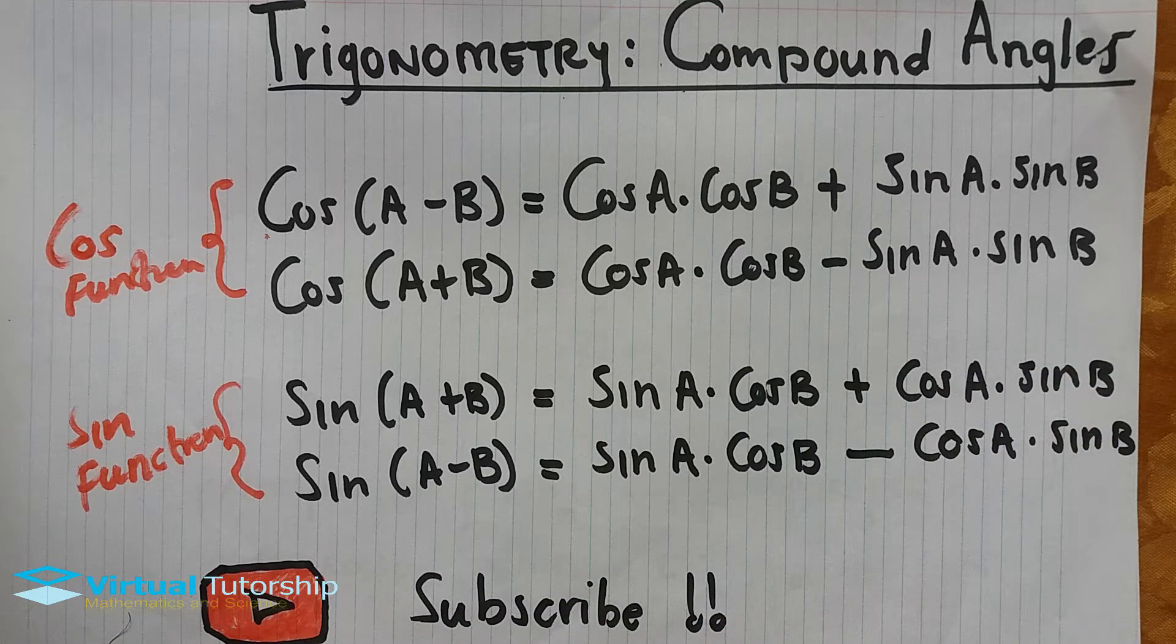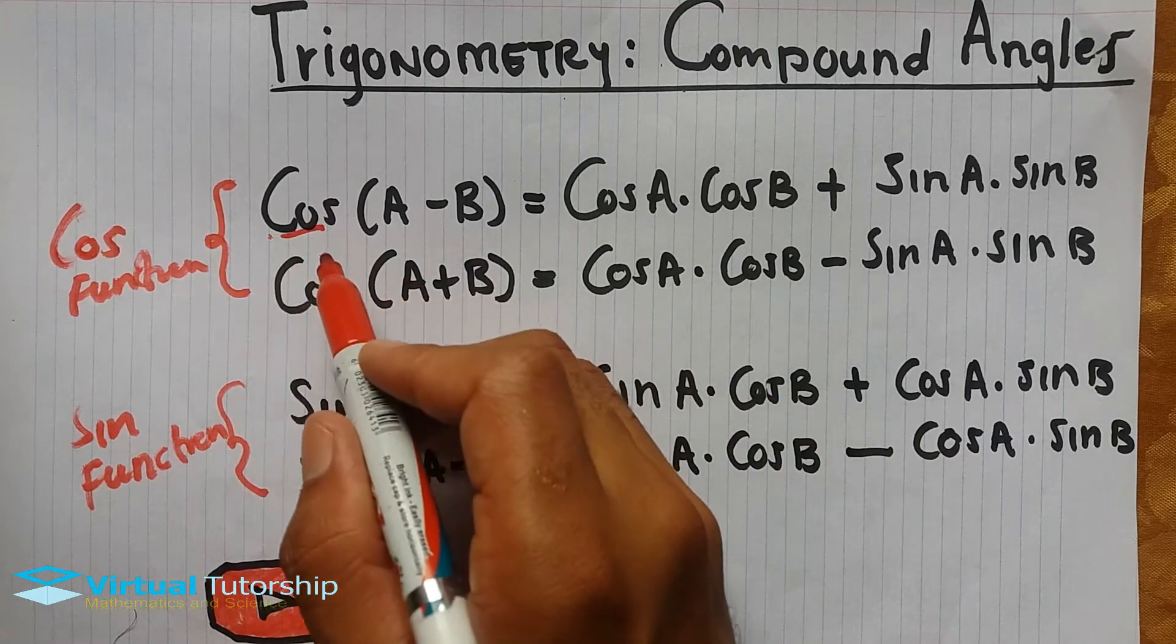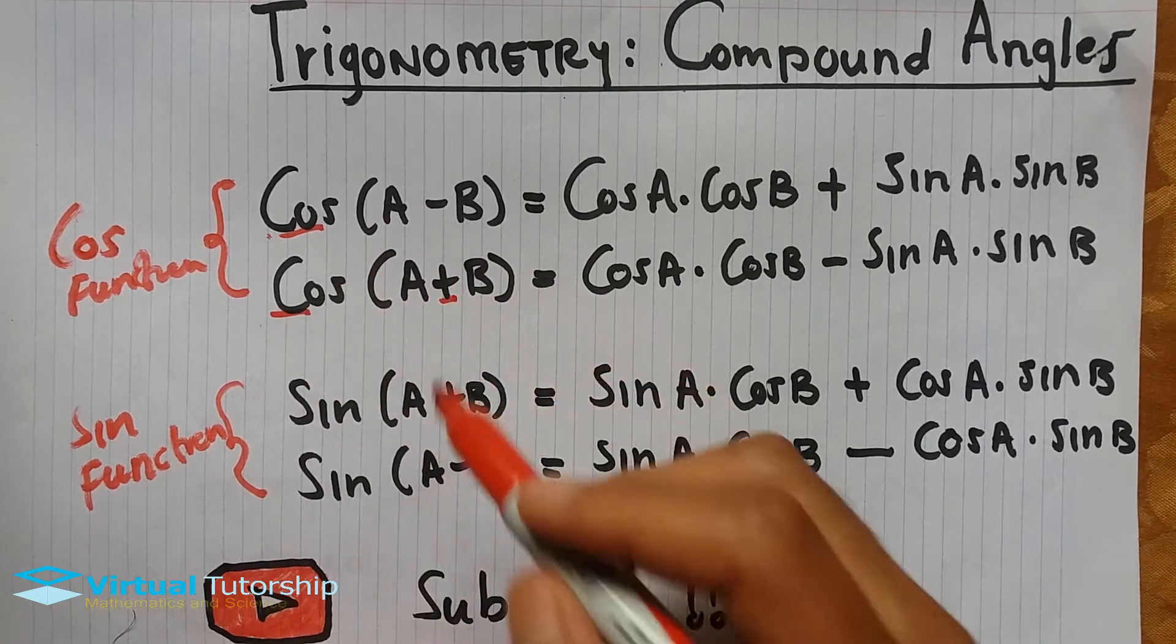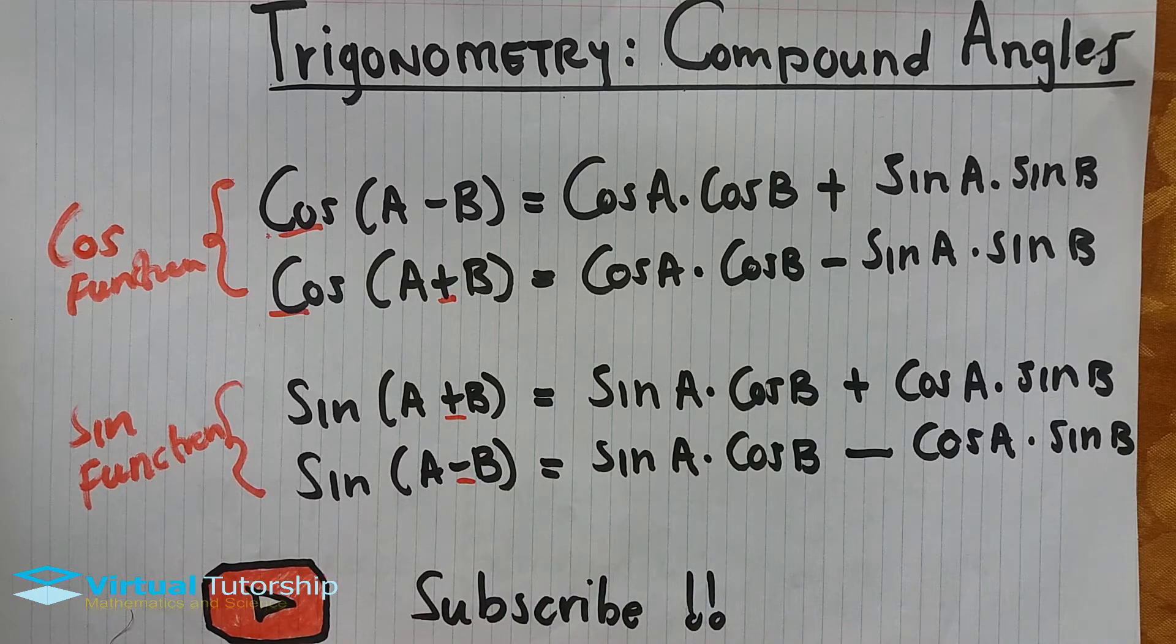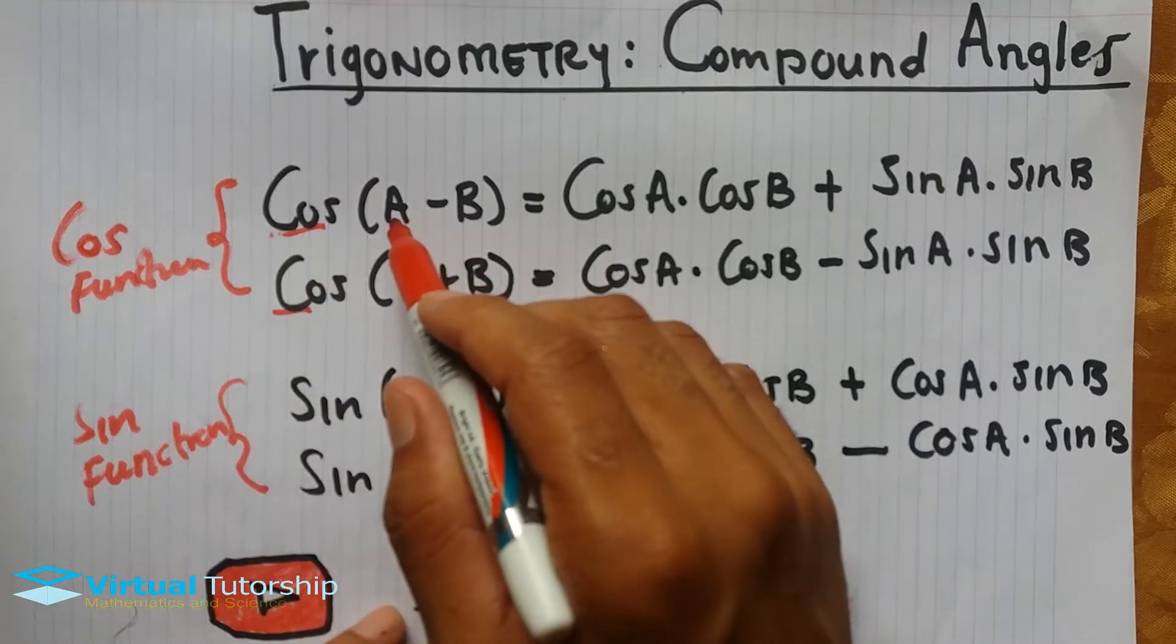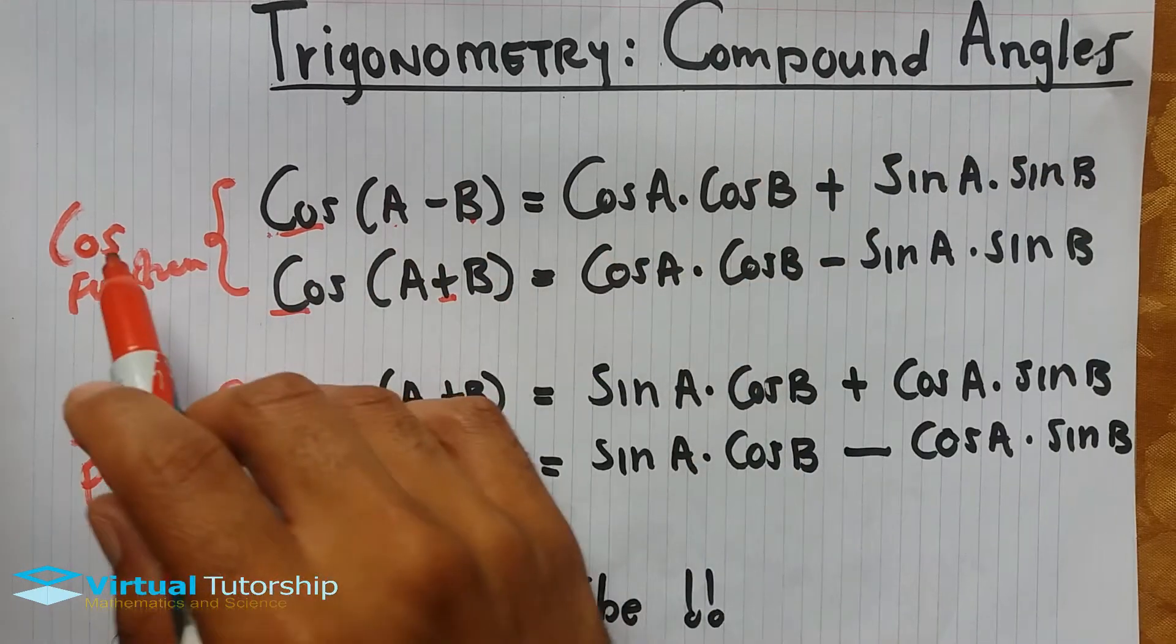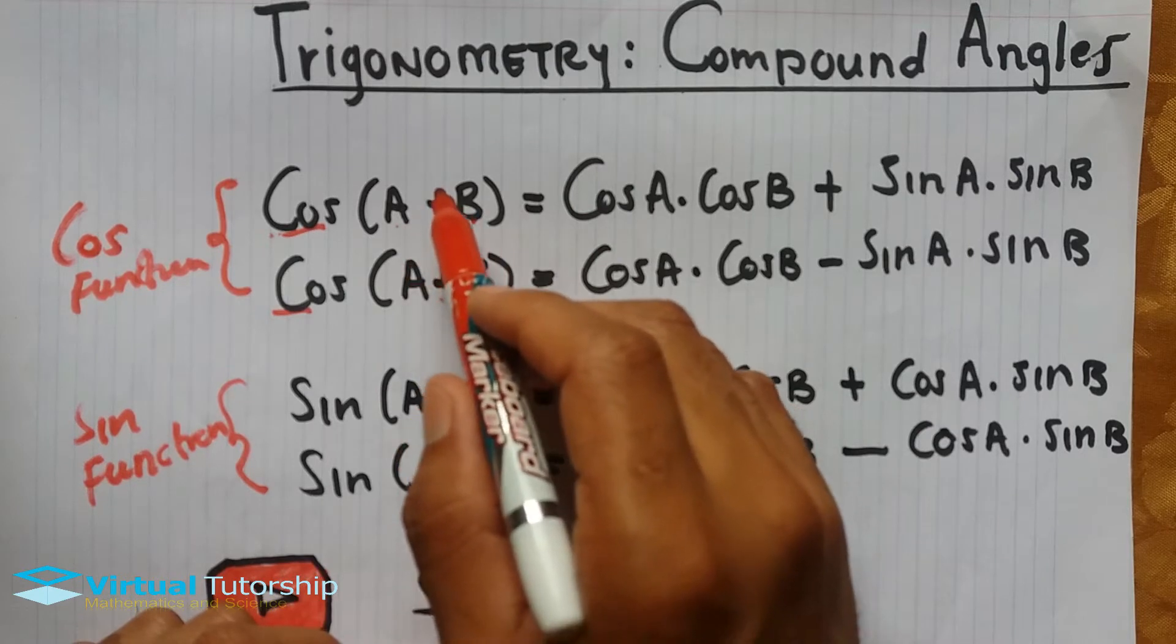Let's start with cos(A-B). The compound angle formula for the cosine function: when you subtract one angle from another, the expression on the right changes.